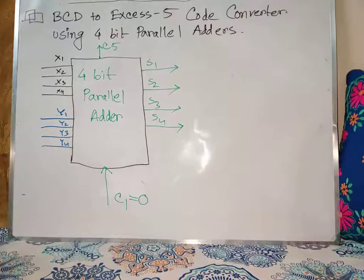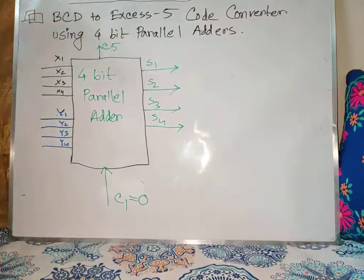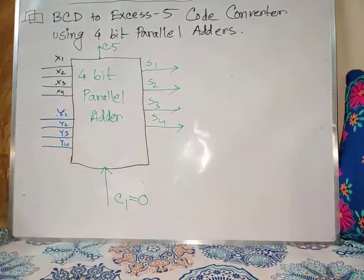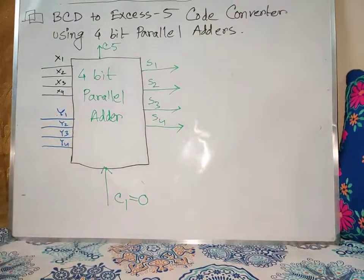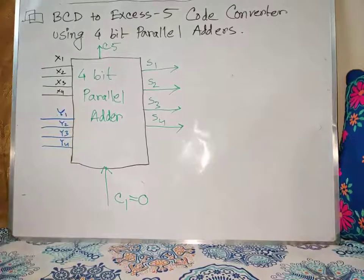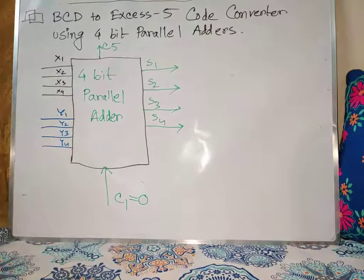Hello everyone. This is another tutorial regarding combinational circuits. I am going to talk about the problem: designing a BCD to Excess-5 code converter using a 4-bit parallel adder.